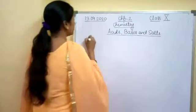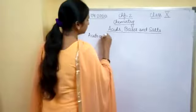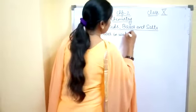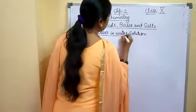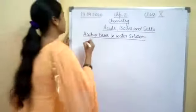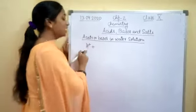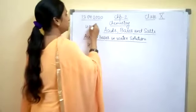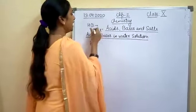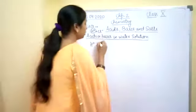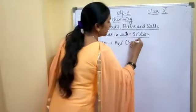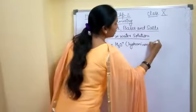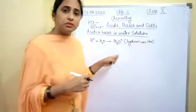Now we will learn about acids and bases when they are dissolved in water — that is, when they are in water solution. Acids give H⁺ ions and bases give OH⁻ ions. The hydrogen ion is unstable — for example, HCl dissociates to form H⁺ and chloride ion. This H⁺ reacts with a water molecule (H₂O) to form a hydronium ion (H₃O⁺). Any substance that releases H⁺ or hydronium ion is called an acid.